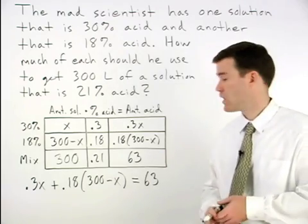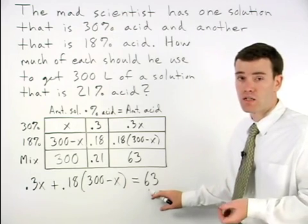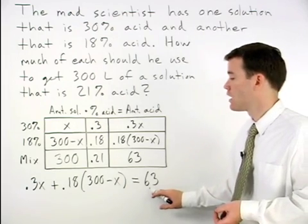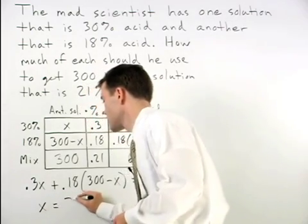Solving from here, I would first multiply both sides of the equation by 100 to get rid of the decimals and eventually we find that x equals 75.